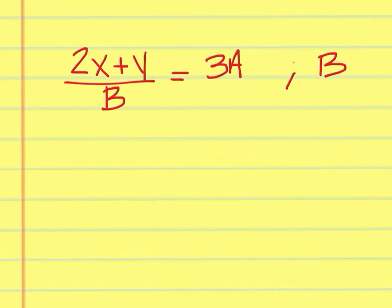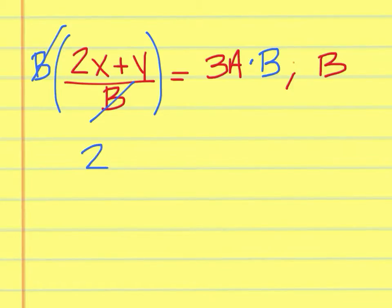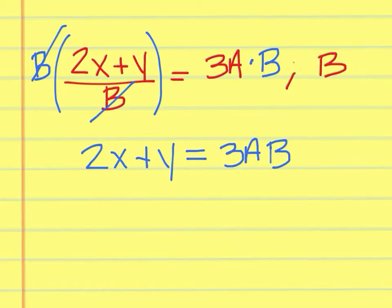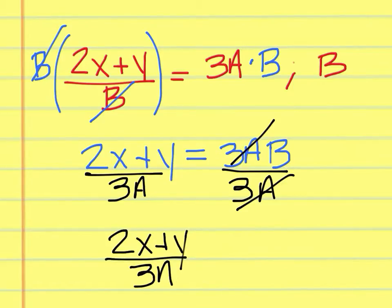For the bonus problem, we're solving for b. Notice that you have b on the bottom. To get that b off of the bottom, you would have to multiply both sides by b — they cancel out on the left-hand side, but you still have a b on the right side. You're left with 2x plus y, and on the right side you'll have 3ab. To get b by itself, divide both sides by 3a. The 3a's cancel out on the right, and you have 2x plus y over 3a, with b by itself on the right, which is what we wanted.